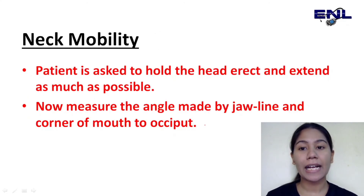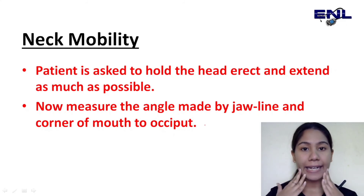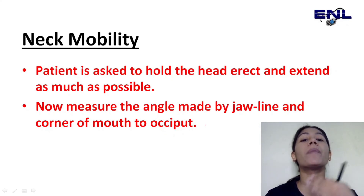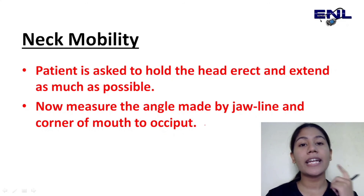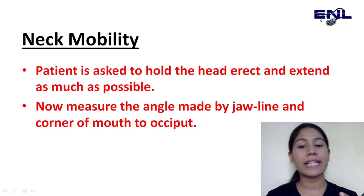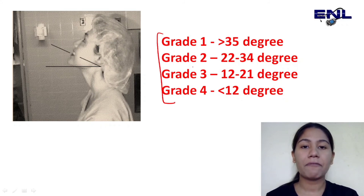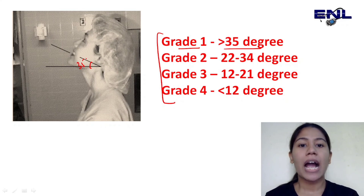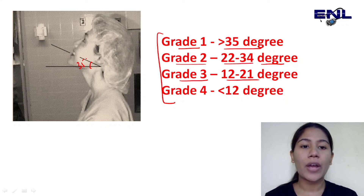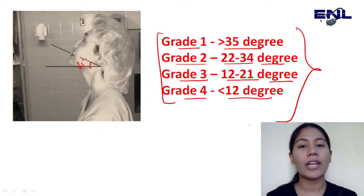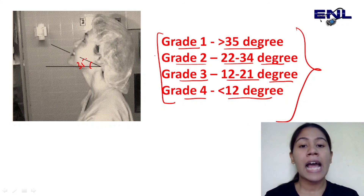Now we come to N — Neck Mobility. We ask the patient to hold their head erect and then extend it as much as possible upward. We then measure the angle formed by the jaw line with the corner of the mouth, as seen in the diagram. Grade 1 is more than 35 degrees — that's okay. Grade 2 is 22 to 34 degrees. Grade 3 is 12 to 21 degrees. Grade 4 is less than 12 degrees. Grade 3 and Grade 4 have a higher risk of airway obstruction and difficult intubation, similar to the Mallampati score.